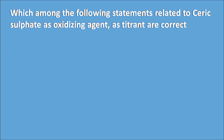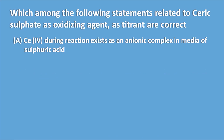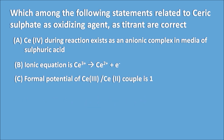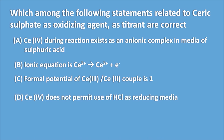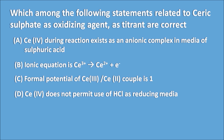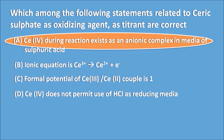Sixth question: Which among the following statements related to ceric sulfate as an oxidizing agent are correct? A) Ce4+ during reaction exists as an anionic complex in sulfuric acid media. B) The ionic equation is Ce3+ → Ce2+ + e−. C) The formal potential of the Ce3+/Ce2+ couple is 1. D) Ce4+ does not permit the use of HCl as reducing media. The right answer is A — cerium-4 during the reaction exists as an anionic complex in sulfuric acid media.